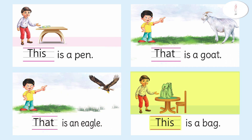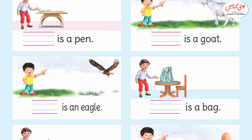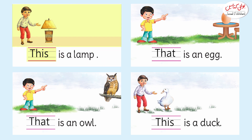Have a look at the next picture — the bag is close to the boy, it is near to him, so we will use 'this': 'This is a bag.' Look at the next picture, dear students — focus on whether the lamp is far from the child or near. The lamp is close to the boy, so we use 'this': 'This is a lamp.'